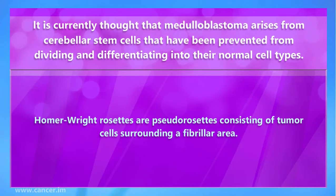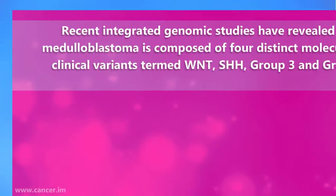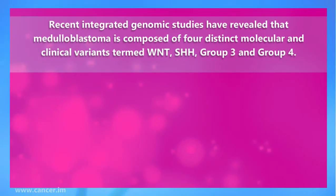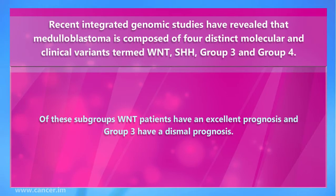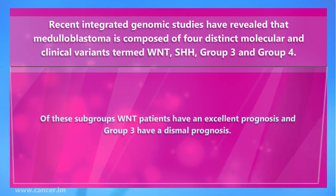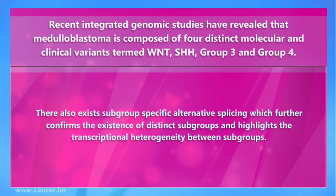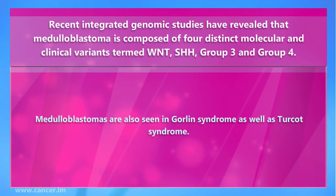Homer-Wright rosettes are pseudorosettes consisting of tumor cells surrounding a fibrillary area. Recent integrated genomic studies have revealed that medulloblastoma is composed of four distinct molecular and clinical variants termed WNT, SHH, Group 3, and Group 4. Of these subgroups, WNT patients have an excellent prognosis and Group 3 have a dismal prognosis. There also exists subgroup-specific alternative splicing, which further confirms the existence of distinct subgroups and highlights the transcriptional heterogeneity between subgroups.